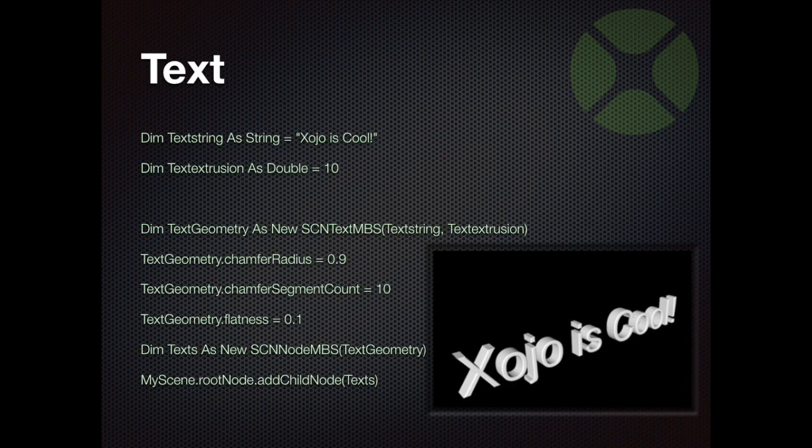Then we come to text. We define a text with the parameters text and the depth of the text. Then we can set other properties to, for example, smooth the edges of the text. The text is very similar to the basic forms and is added to the scene in the same way.